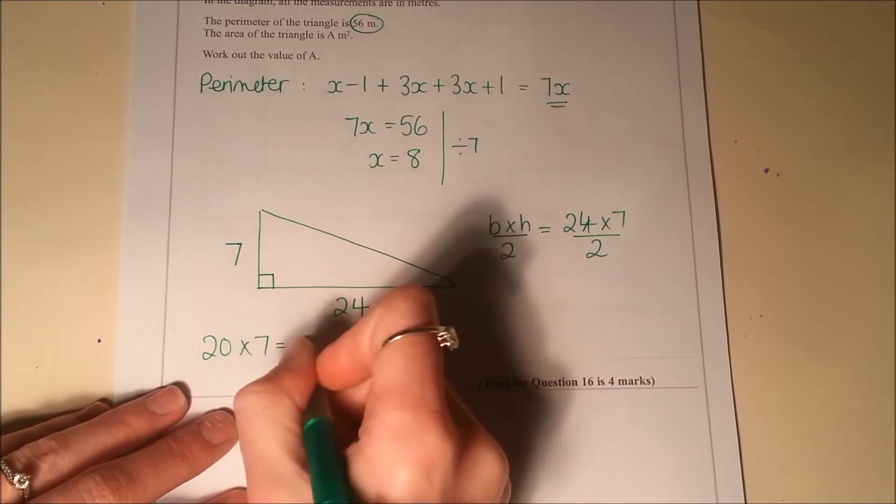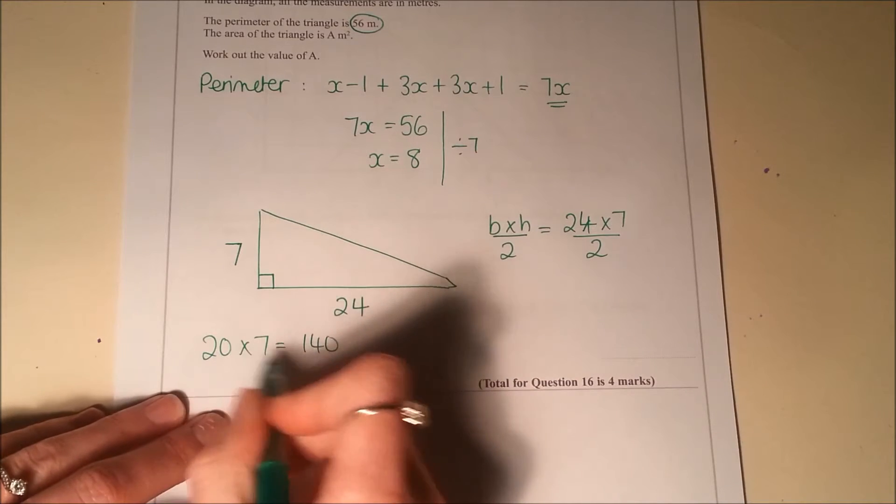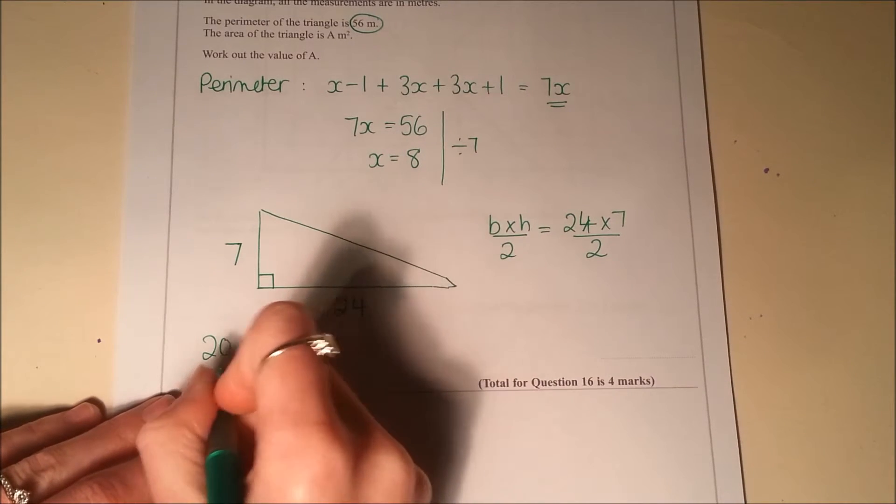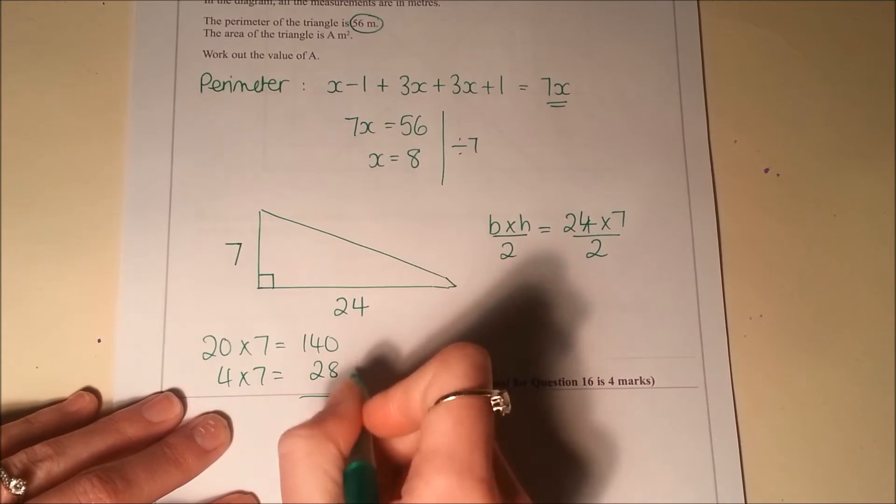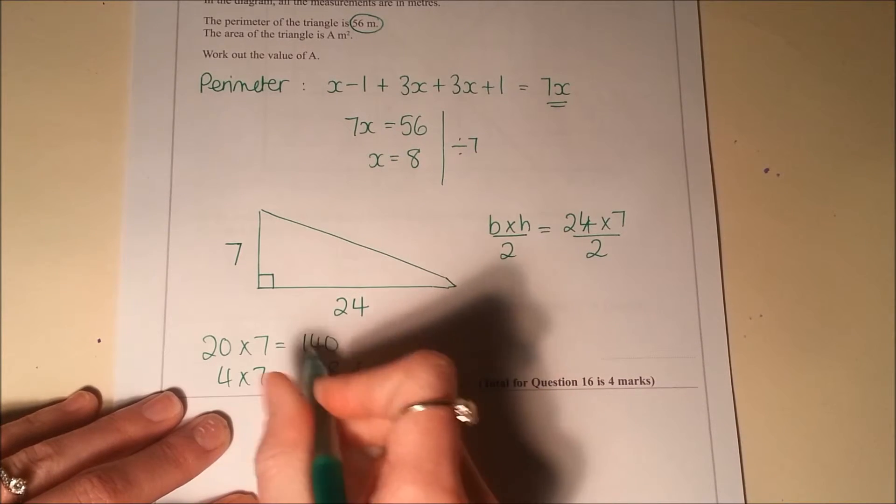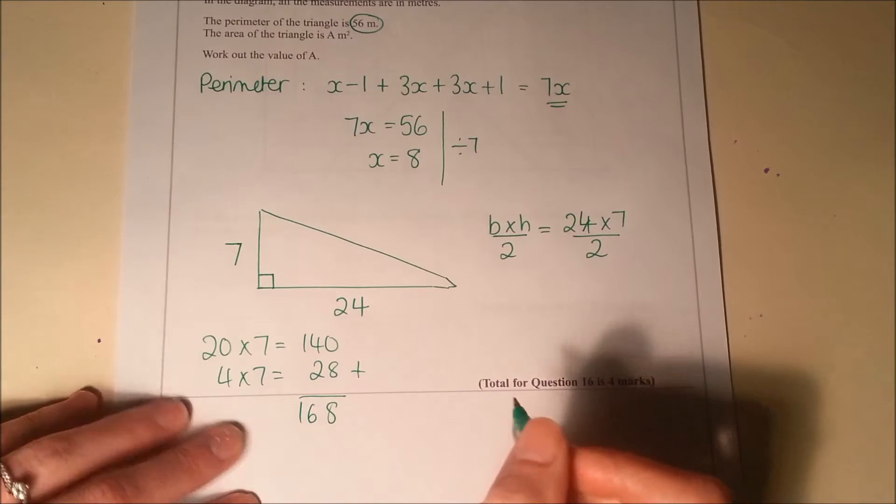20 times 7 is going to be 140, because 2 times 7 is 14. And then 4 times 7 is 28. Add them together. 1, 6, 8.